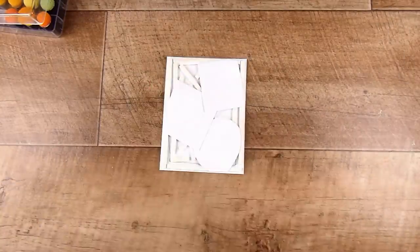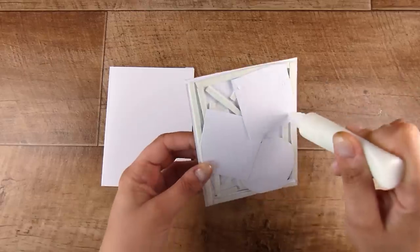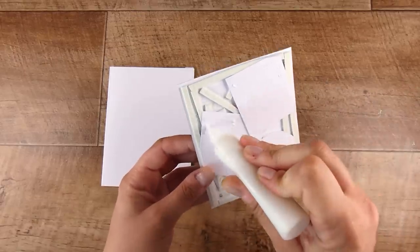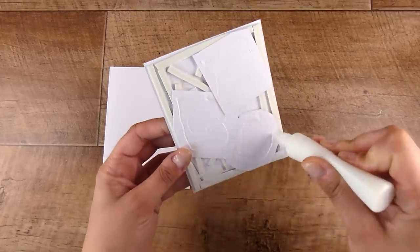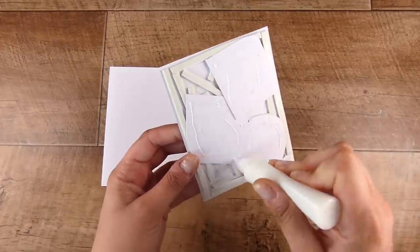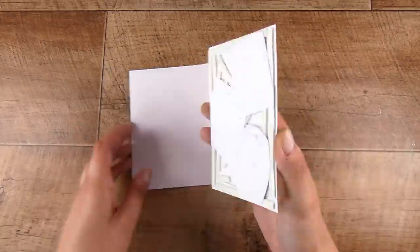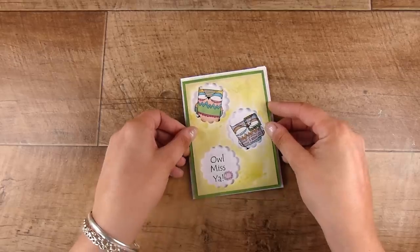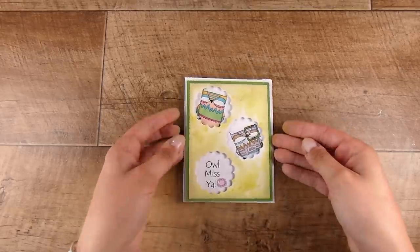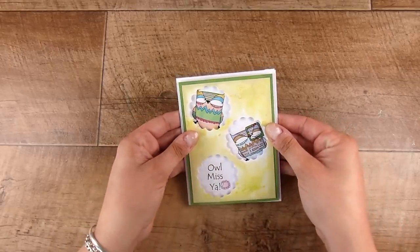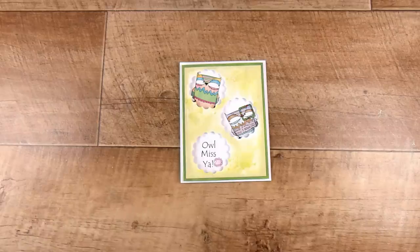I'm going to add some liquid glue onto the back, just those bits that don't have the exposed adhesive from the foam, and put this down onto my four and a quarter by five and a half inch card base. This one is pretty much ready to go. This is the one where we have the images that are recessed, they are down underneath the card front.